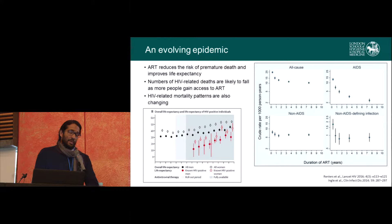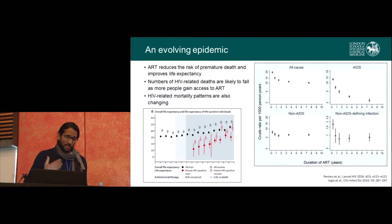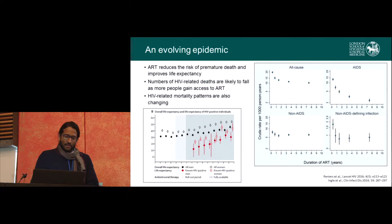But it's not the same disease that it was, say 20 to 25 years ago, when a diagnosis of HIV was effectively a death sentence. ART has drastically changed that, and people who are today diagnosed as HIV positive, assuming they take treatment, have very good life expectancy in high income countries. So not only are numbers of HIV-related deaths falling, but also mortality patterns related to HIV. The graph at the bottom shows data from South Africa, with a gradual incline in life expectancy.